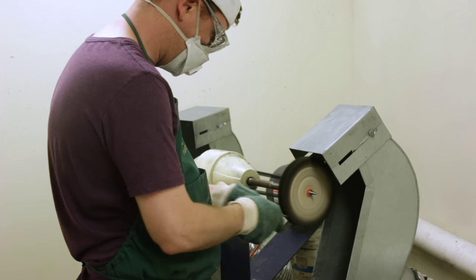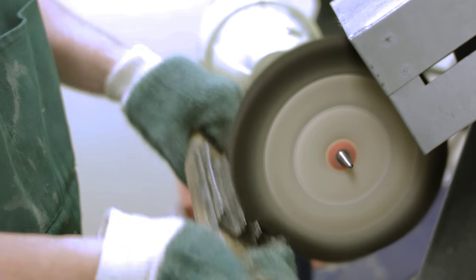There are two basic types of buffing: cut and color. Cut buffing uses a more aggressive polish to smooth out rough finishes and scratches.